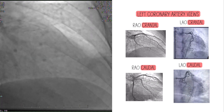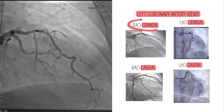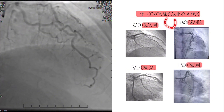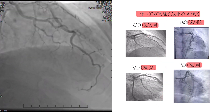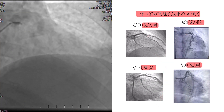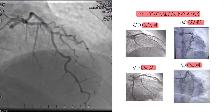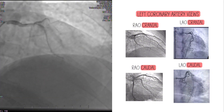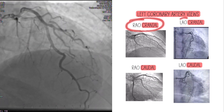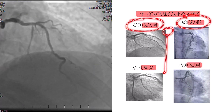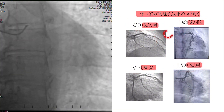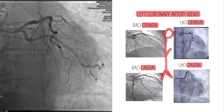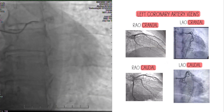So we're going to start with what we call the four corners: RAO cranial, LAO cranial, LAO caudal, and RAO caudal. If the patient is laying on the table, this is where the camera will be in relation to the patient — the camera being the image intensifier, the big square or round one that's in front of the patient's face, hanging over them. RAO cranial and LAO cranial are both up towards the head, and LAO caudal and RAO caudal are down towards the belly.